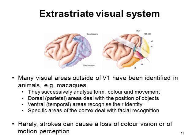There are specific areas of the cortex that deal with facial recognition, and there's a rare form of blindness where patients can see but cannot recognise faces. Very rarely, strokes can cause loss of function in any one of these areas, so you may lose colour vision or motion perception, while the rest of your vision remains intact, because only that particular part of the extra-striate system has been affected.